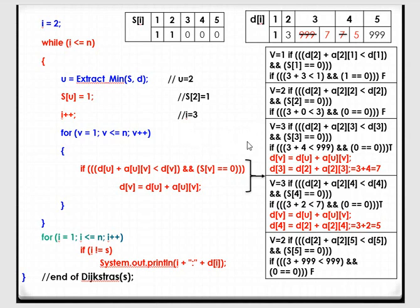V incremented to 3: D[2] plus A[2][3] — D[2] is 3 and A[2][3] in the cost adjacency matrix is 4, so 3+4=7. Is 7 less than D[3] which is 999? Yes. And is vertex 3 unvisited? Yes — both conditions are true. So we change D[3] equal to D[2] plus A[2][3], that is 3+4 equals 7. In place of 999, we replace with 7.